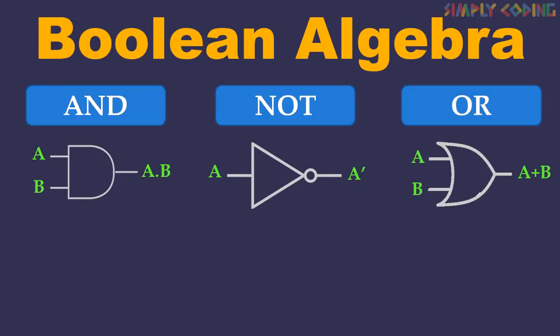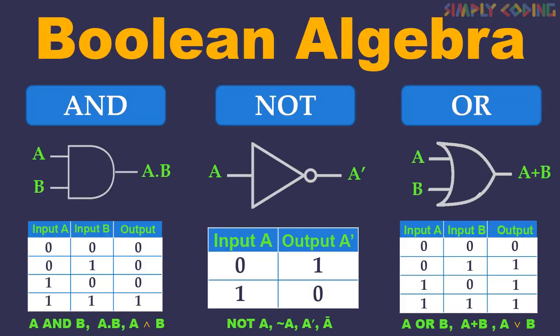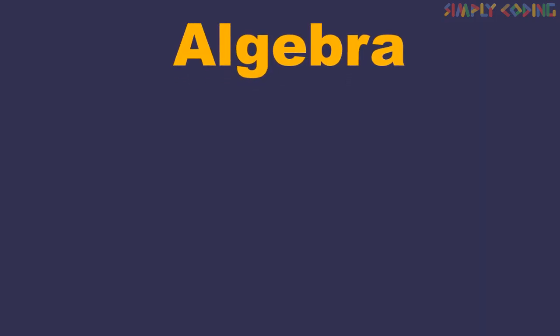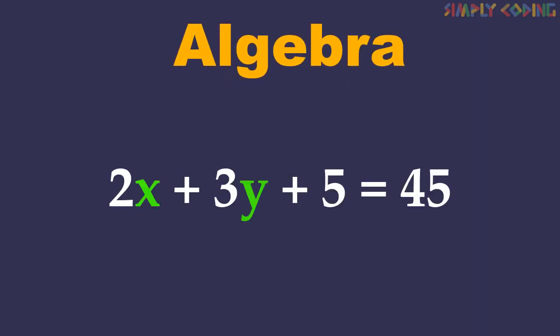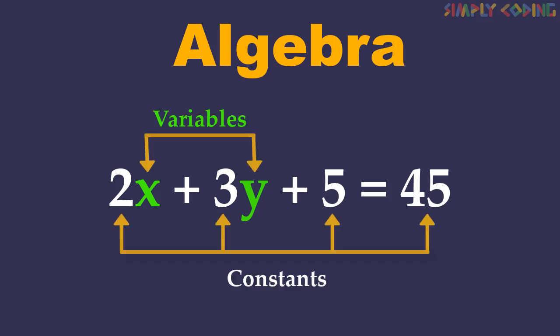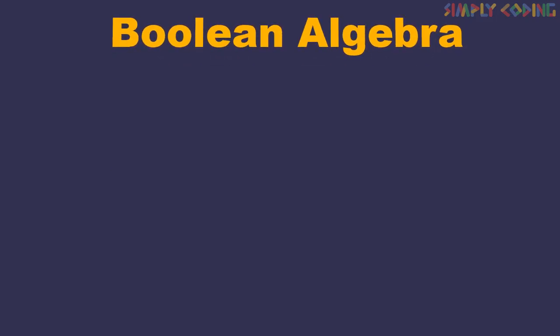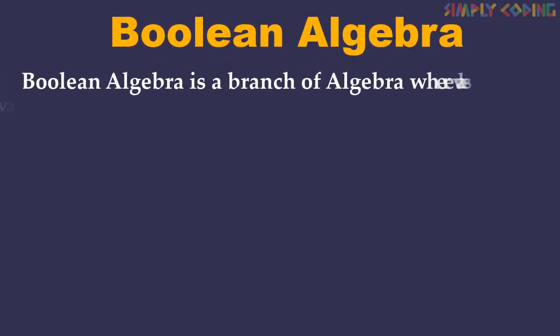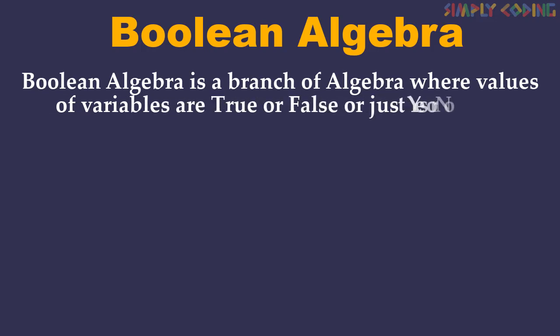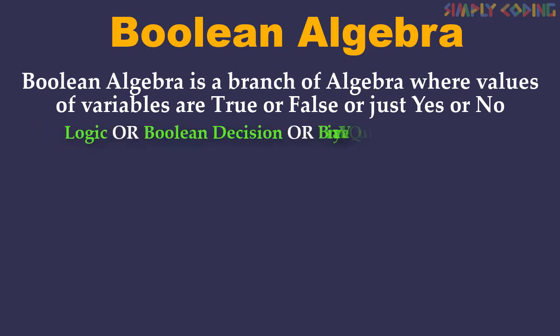In this video we will understand what is Boolean algebra and solve a few questions on truth tables and logic gates. We all have studied algebra in maths where we have expressions containing variables and constants which we solve using some rules. Boolean algebra is a branch of algebra where the value of variables are true or false, or just yes or no. It is also called logic, Boolean decision, or binary value quantity.